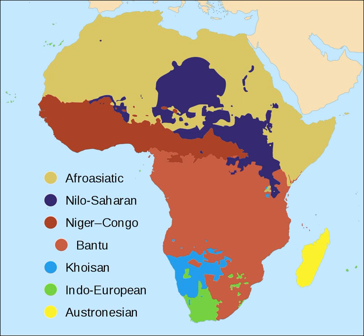Nilo-Saharan languages consist of a hundred diverse languages. The family has a speech area that stretches from the Nile Valley to northern Tanzania and into Nigeria and DR Congo, with the Songhai languages along the middle reaches of the Niger River as a geographic outlier. Genetic linkage between these languages has not been conclusively demonstrated, and among linguists support for the proposal is sparse. The languages share some unusual morphology, but if they are related, most of the branches must have undergone major restructuring since diverging from their common ancestor.